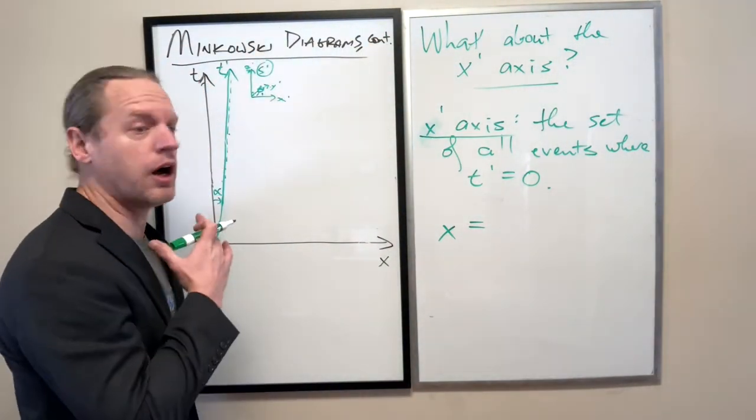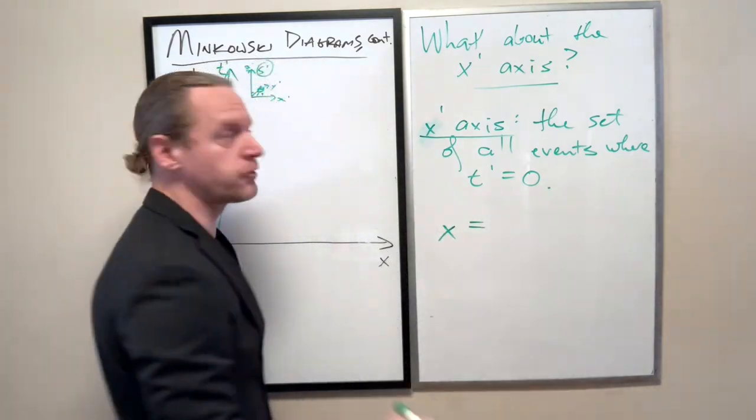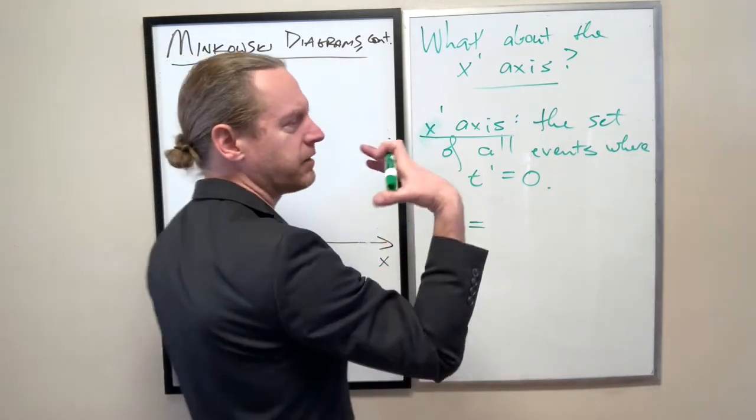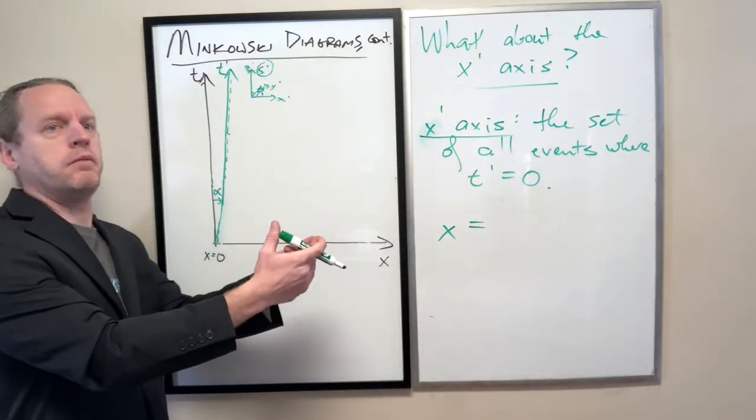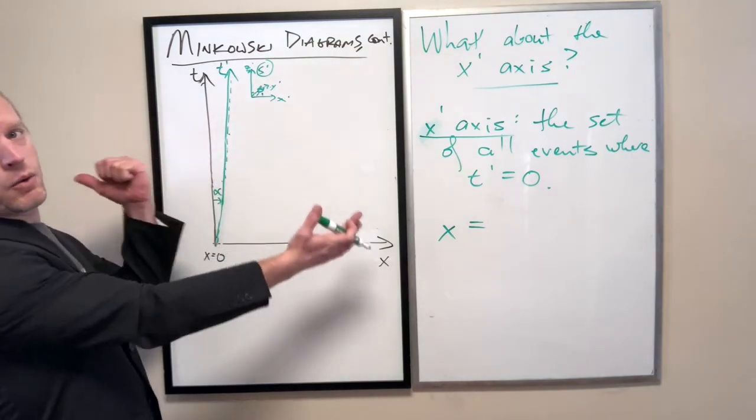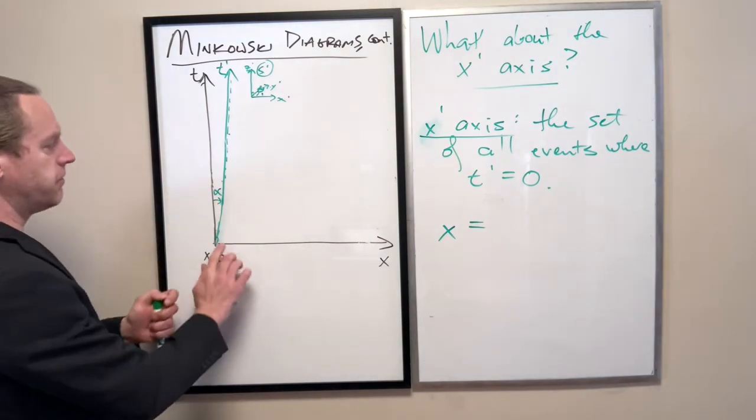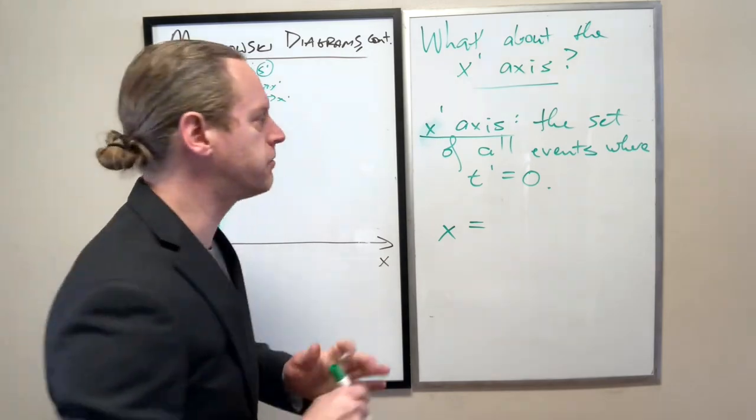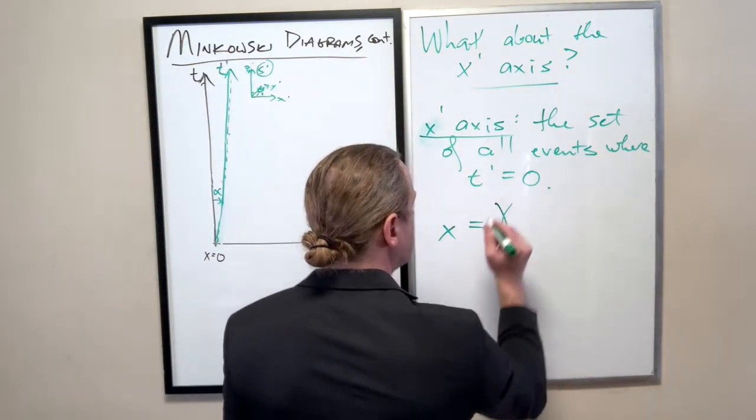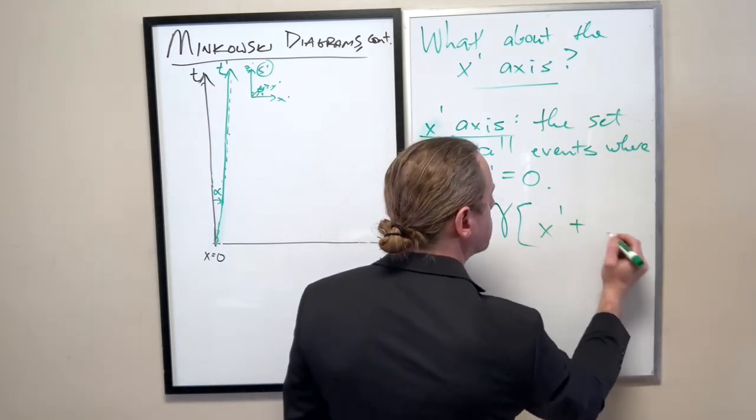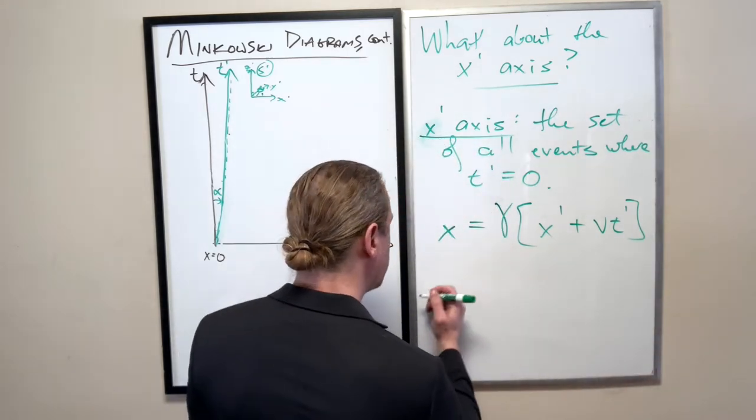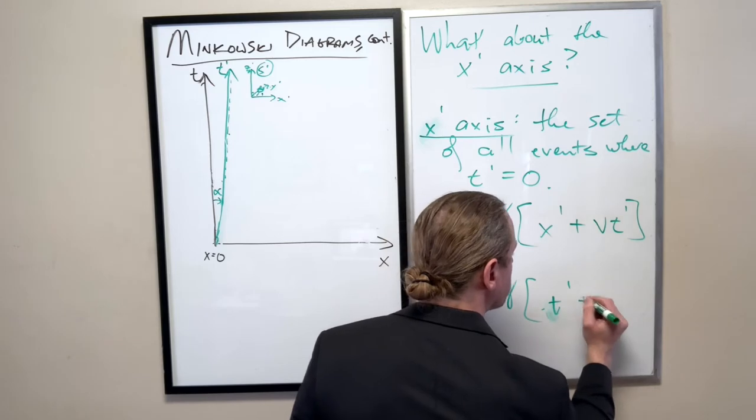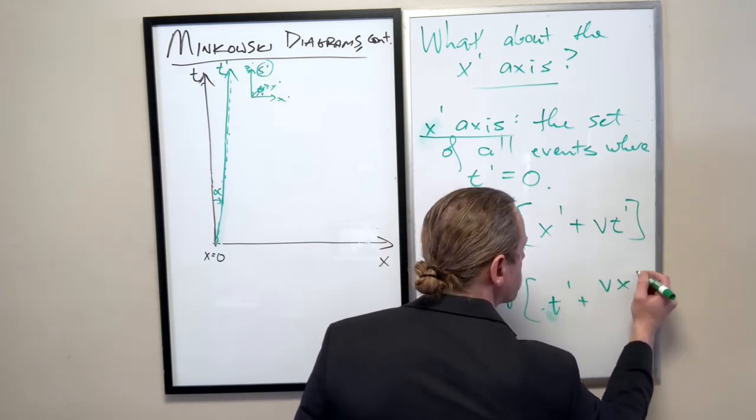Let's take the Lorentz transformations for if you know the prime variables and you want to find the unprimed. These are the inverse Lorentz transformations. In this case, instead of having minus v, if you view it from s-prime's frame, it looks like s is moving backwards at v. So the only difference is we substitute a negative v. The transformations are: x equals gamma times x-prime plus vt-prime, and t equals gamma times t-prime plus vx-prime over c-squared.